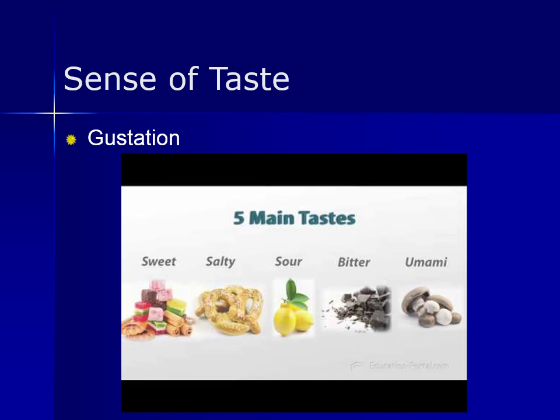The five major tastes are sweet, sour, salty, bitter, and savory, and they can actually be sensed by all parts of the tongue. Only the sides of the tongue are more sensitive than the middle overall. The back of our tongue is very sensitive to bitter tastes, apparently to protect us so that we can spit out poisonous or spoiled foods before they enter the throat and are swallowed.